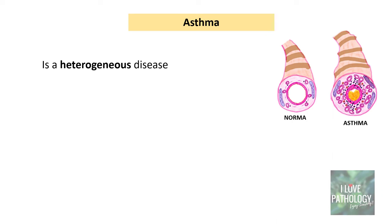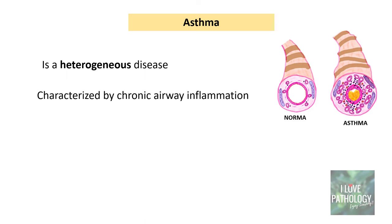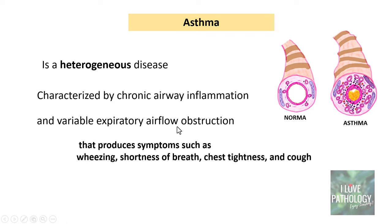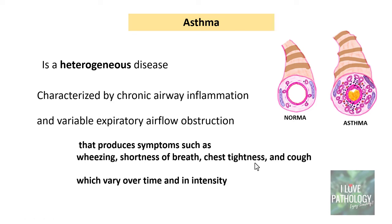What is asthma? Asthma is a heterogeneous disease — heterogeneous means there is no single etiology for this particular disease; it has several etiologies. It is a heterogeneous disease which is characterized by chronic airway inflammation and variable amounts of expiratory airflow obstruction. Chronic airway inflammation accompanied by expiratory airflow obstruction produces clinical symptoms such as wheezing, shortness of breath, chest tightness, and cough, which can vary over time and in intensity.